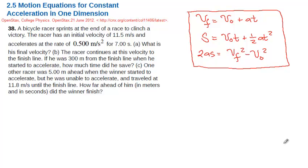The problem goes like this: A bicycle racer sprints at the end of a race to clinch a victory. The racer has an initial velocity of 11.5 meters per second and accelerates at the rate of 0.500 meters per second squared for 7 seconds.